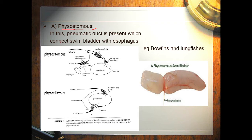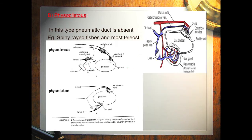In the physostomes type, a pneumatic duct is present which connects the swim bladder with the esophagus. The function of this tube is to remove excess gas from the swim bladder, and when gas is required in the swim bladder, it inflates from the esophagus. For example, this type is found in bowfins and lungfishes.